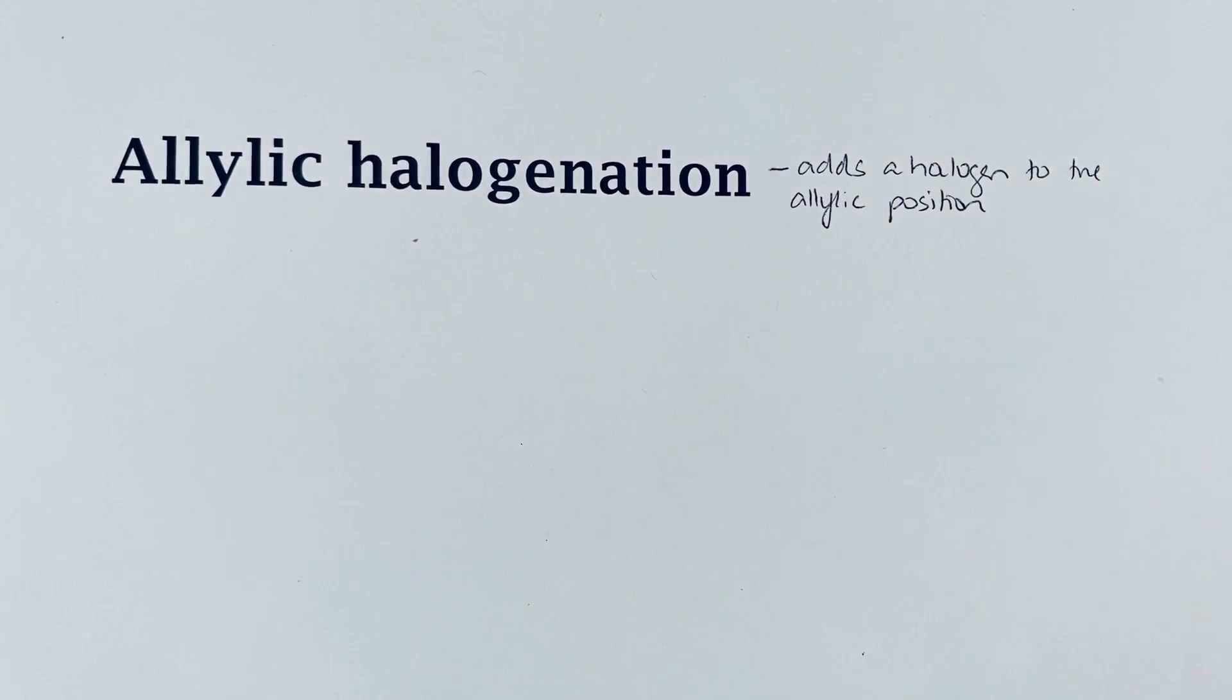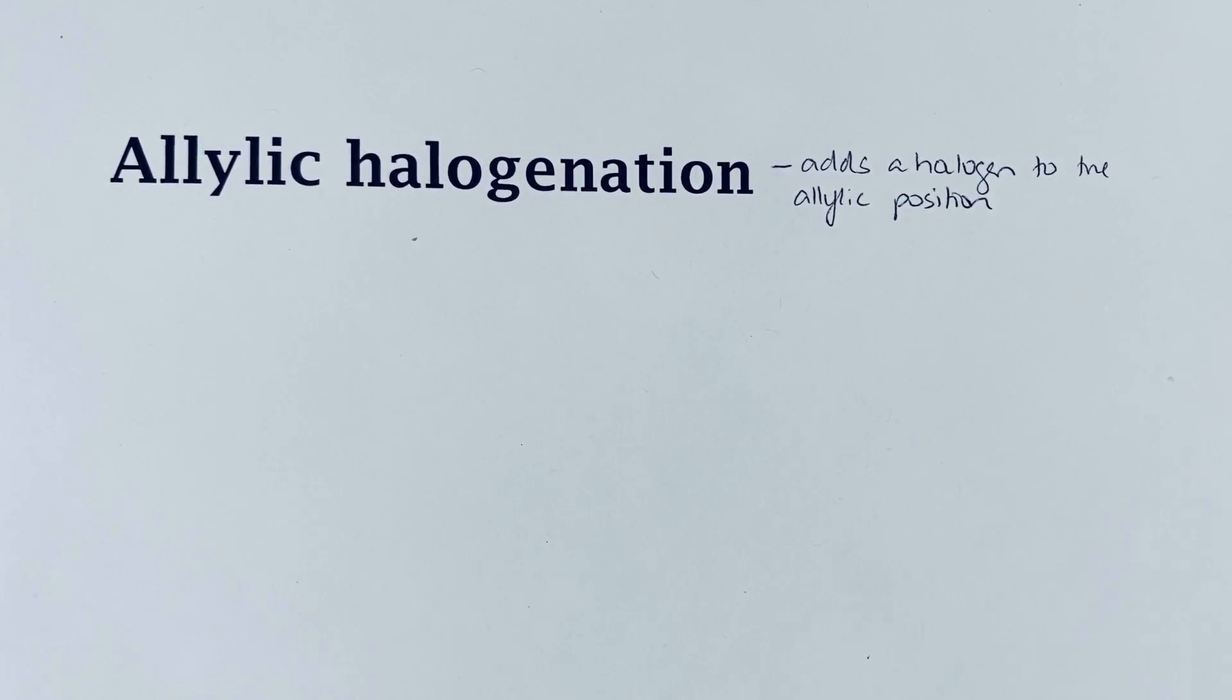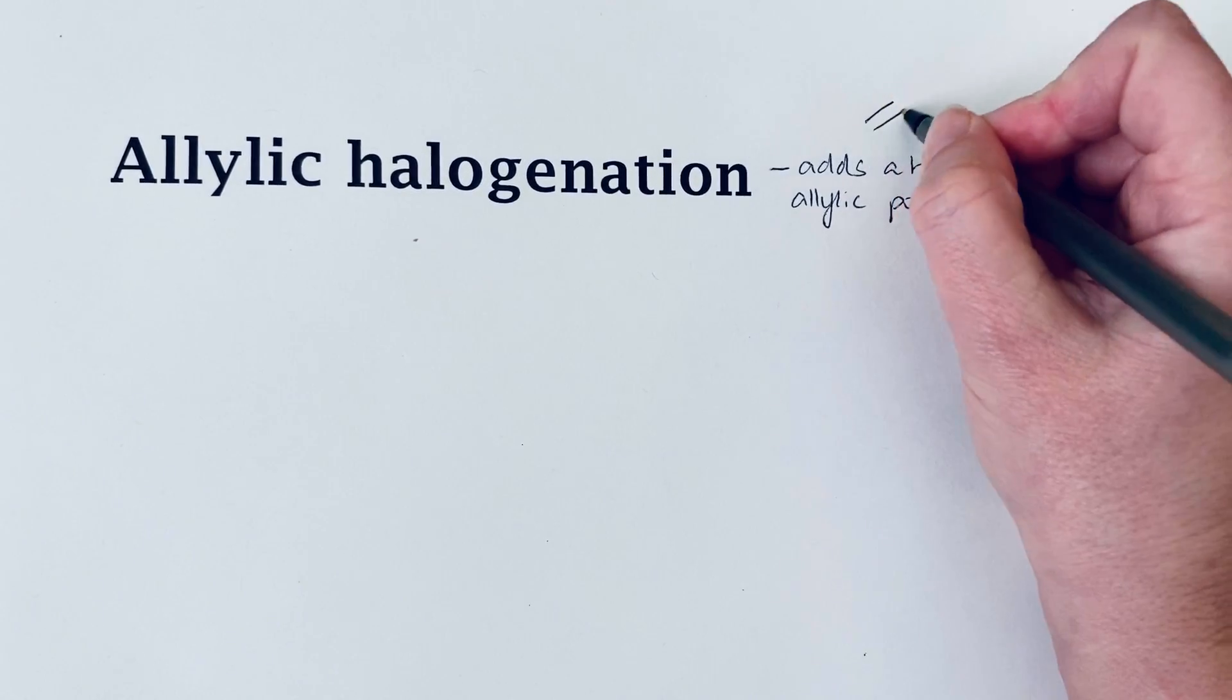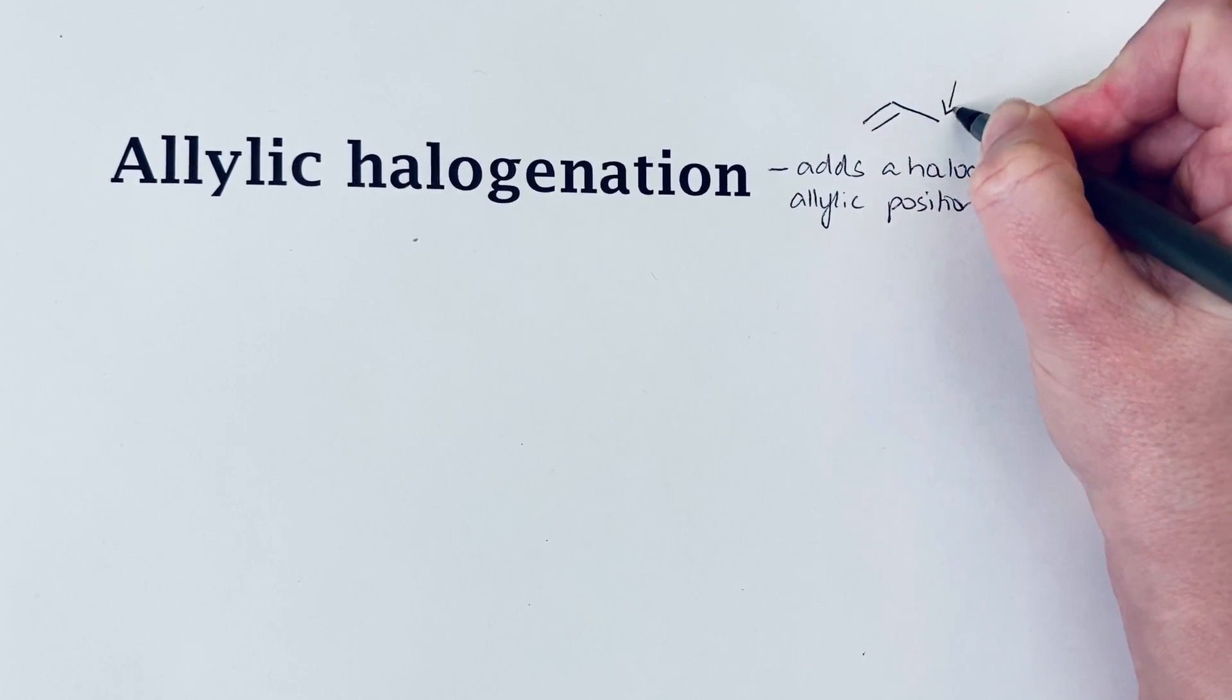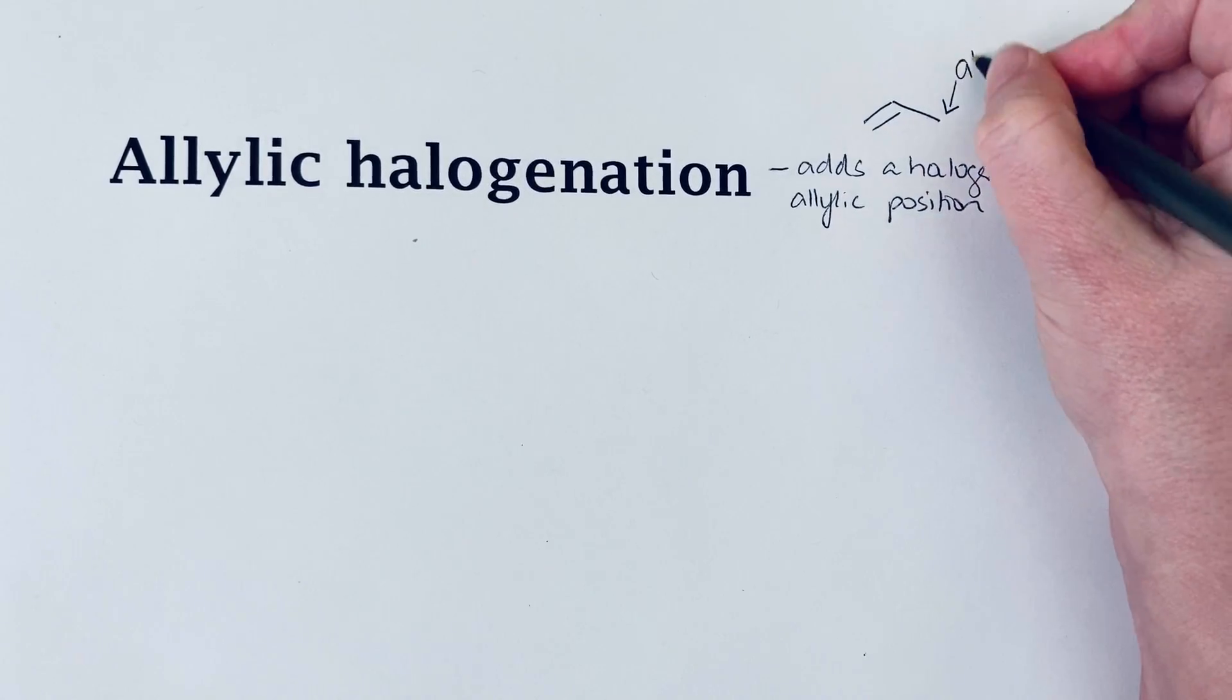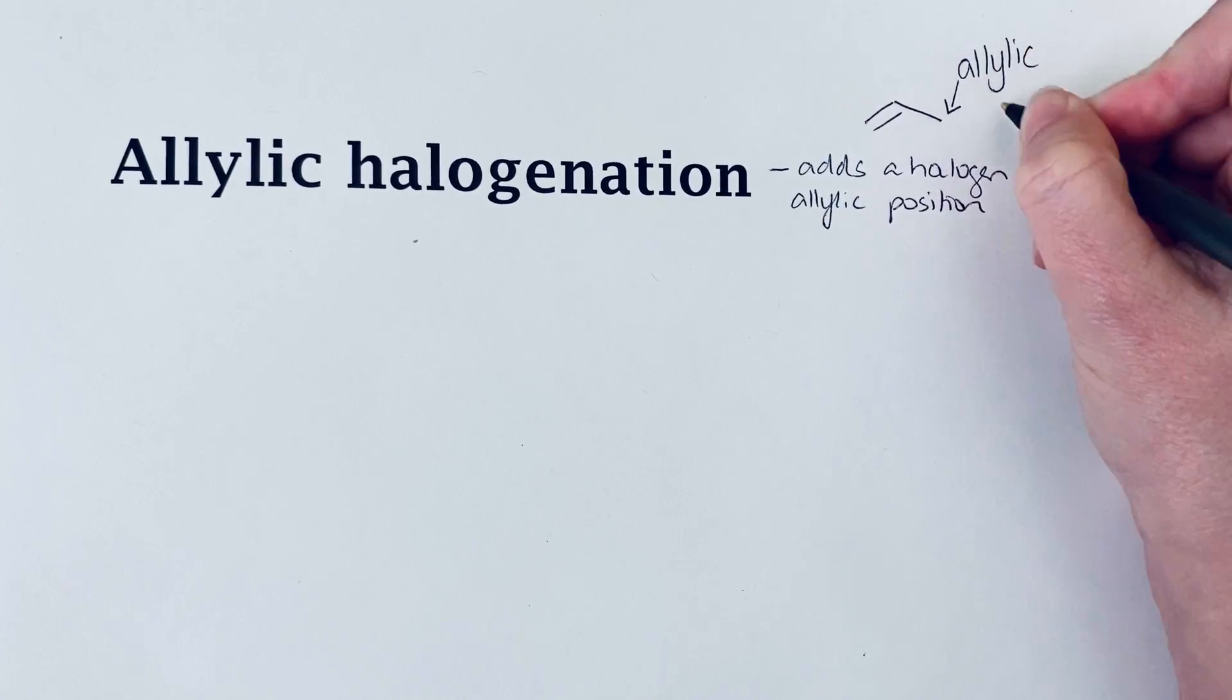First we need to recall what the allylic position is. This is a carbon atom that is adjacent to a pi bond. That's what we call an allylic carbon.